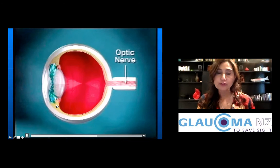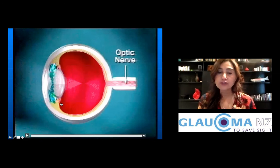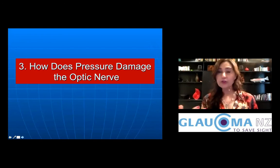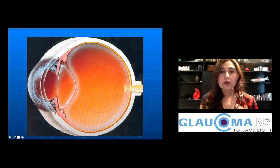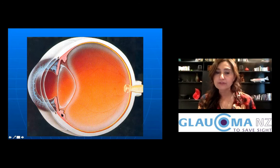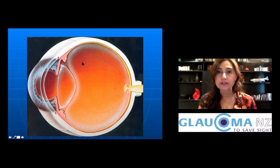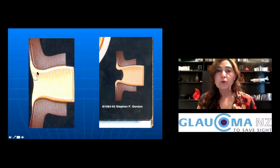Here we see the eye in side profile — the gland in the corner that produces the fluid, and the drainage gland at the front. The pressure fills the entire cavity and is transmitted to the optic nerve at the back of the eye. The third point is: how does pressure damage the optic nerve? The drainage sponge removes fluid, but the optic nerve is constantly having to withstand the pressure inside the eye.